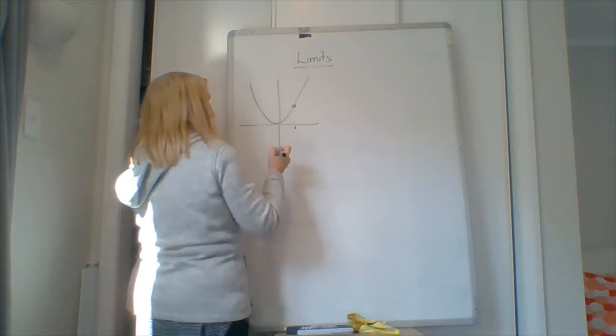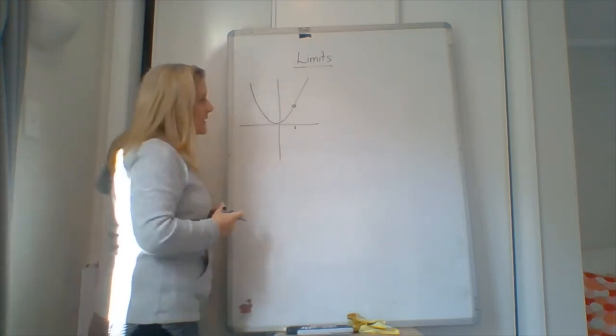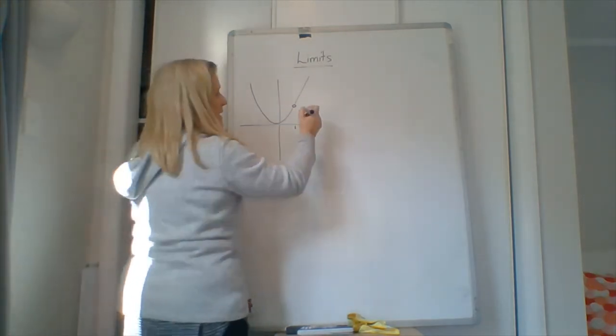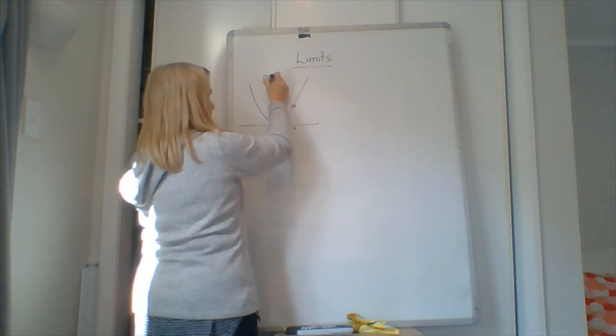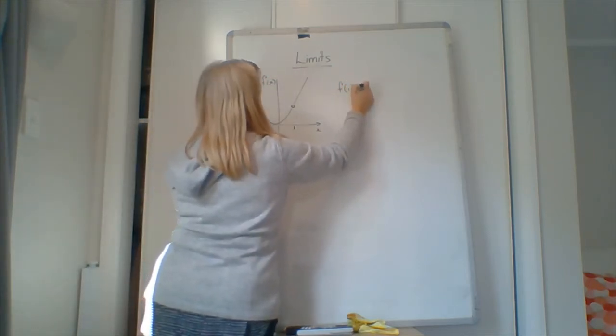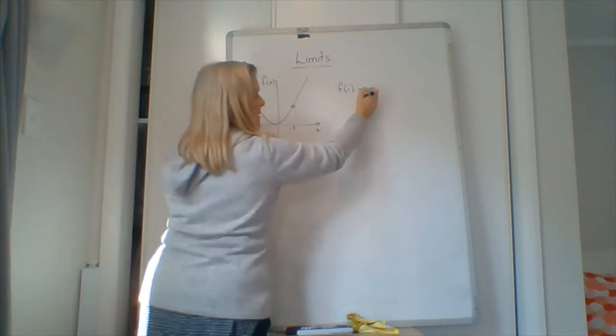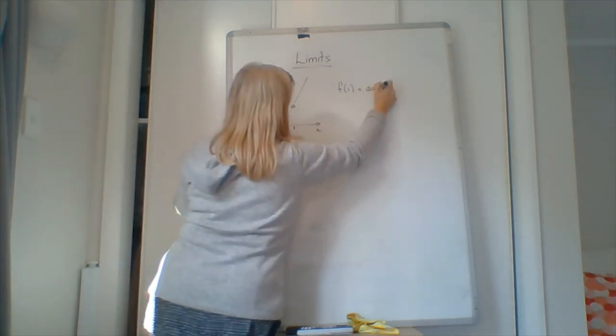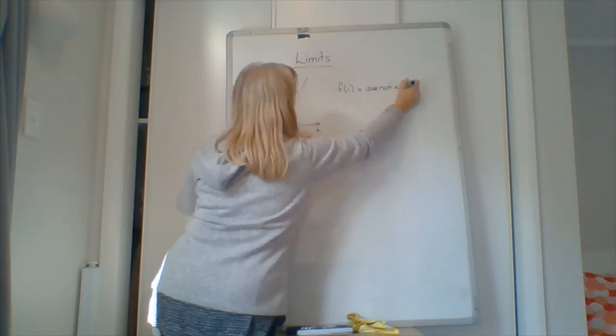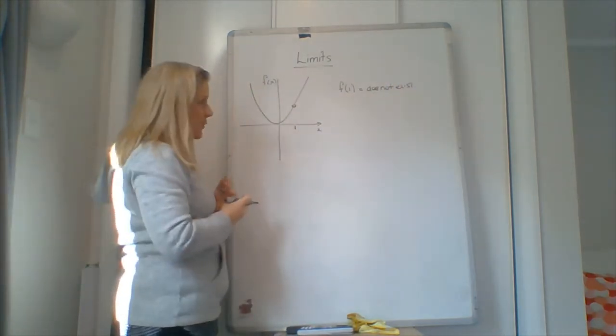And we're going to say that the value is basically x squared. So what we're going to say is, what we're interested in is, if we say that this is f of x, the function, and this is x, f of 1 equals does not exist. Because there is no value there, there's an empty hole or equivocal there, there's no value.